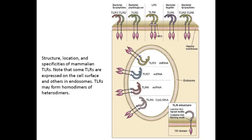Mammalian TLRs are involved in responses to a wide variety of molecules expressed by microbial but not by healthy mammalian cells. Examples of bacterial products that bind to TLRs are LPS and lipoteichoic acid, which are constituents of the cell walls of gram-negative bacteria and gram-positive bacteria, respectively, and flagellin, the protein subunit component of the flagella of motile bacteria.